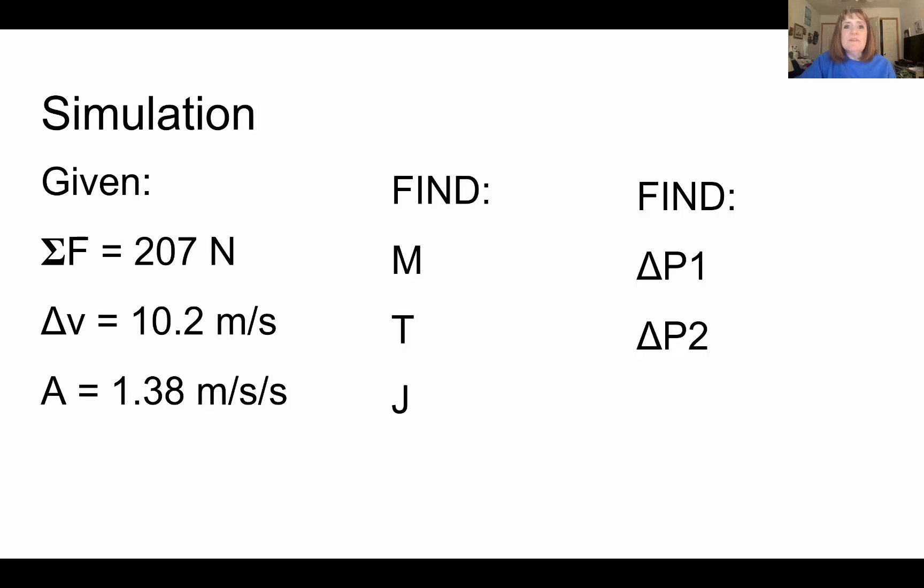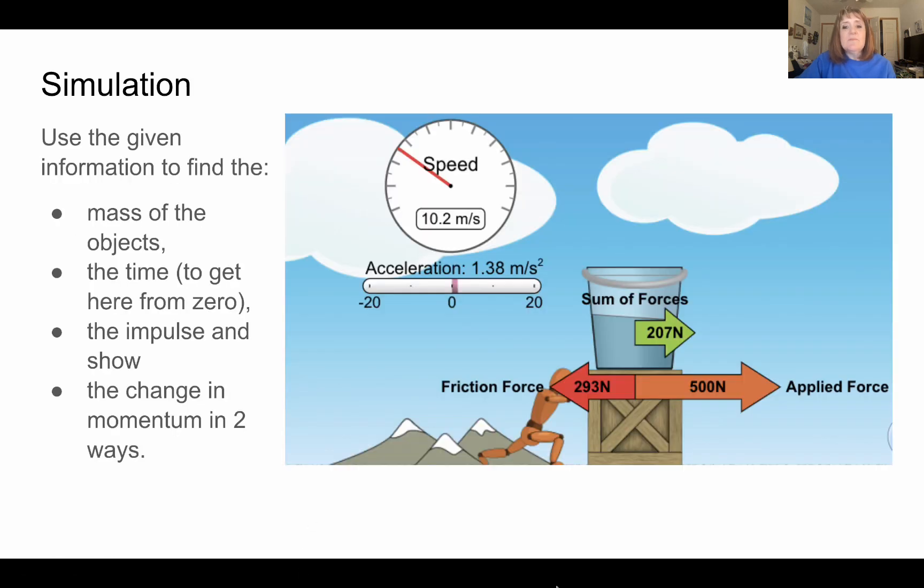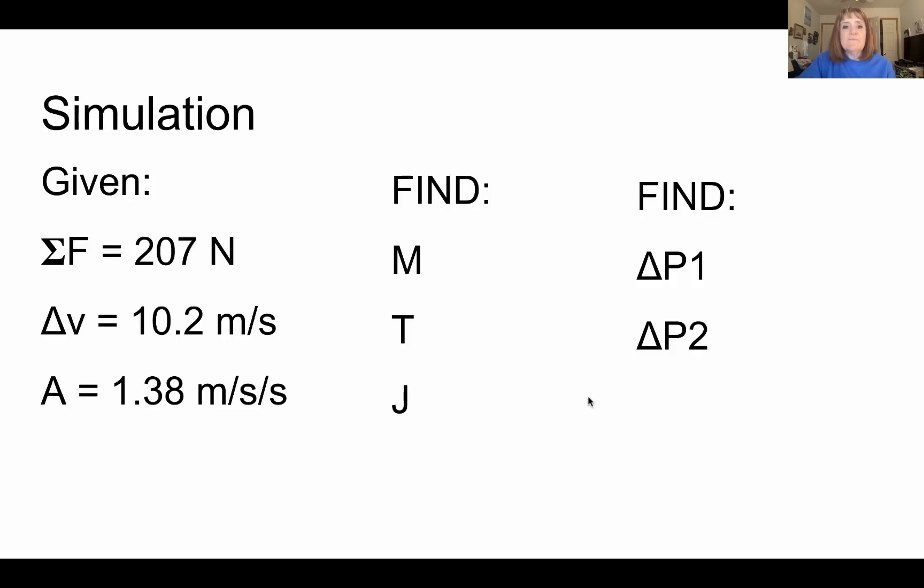So for example, in that given problem, you were given a net force of 207 Newtons. Notice you have an applied force of 500 Newtons and a frictional force of 293. You're also given that the velocity changed by 10.2 meters per second. The acceleration was 1.38 meters per second per second. From that, you could find the mass, the amount of time that the force was applied, the impulse, and the change in momentum in two ways.